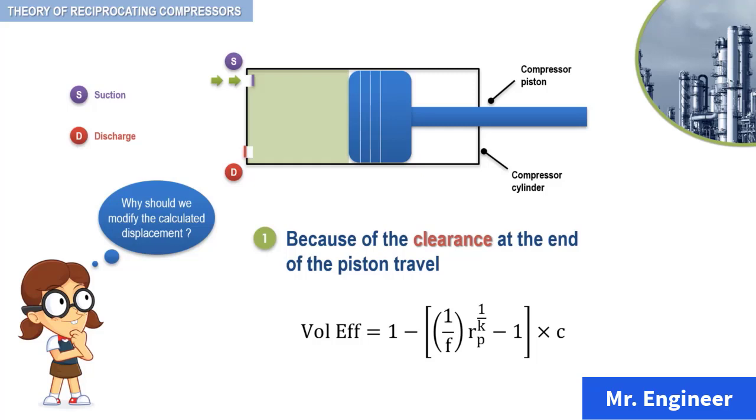The limit of the theoretical value can be demonstrated by substituting 0 for the clearance C, which results in a volumetric efficiency multiplier of 1.